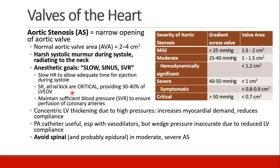The mnemonic for anesthetic goals in patients with aortic stenosis is Slow, Sinus, and SVR. We want them to be slow because a slow heart rate allows adequate time for ejection during systole — the ventricle is trying to squeeze out as much blood as possible through a very narrow opening. We want to have a nice full ventricle. In order to get ventricular filling, we want to be in sinus rhythm so we can get that atrial kick to help get the ventricle as full as possible.